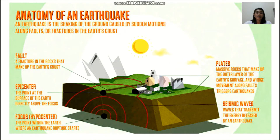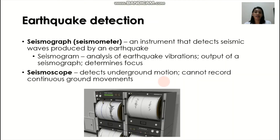Earthquake detection can be done by a seismograph and a seismoscope. A seismograph or seismometer is an instrument that detects seismic waves produced by an earthquake. A seismoscope detects underground motion but cannot read continuous ground movements.